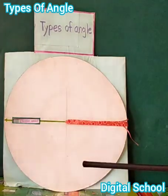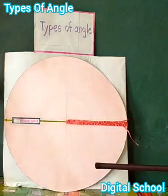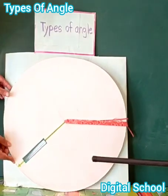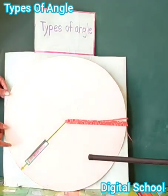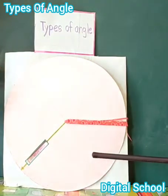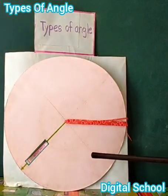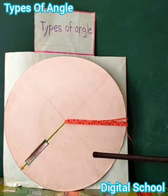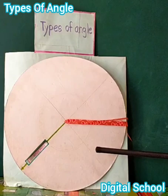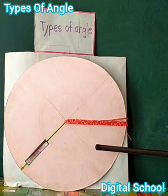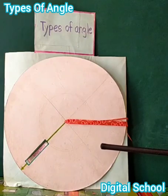Assalamu alaikum, I am Asuna. Today we will learn about types of angle. Dear friends, look at the board. This is a reflex angle. The definition of reflex angle: an angle that measures more than 180 degrees but less than 360 degrees is called a reflex angle. In the figure, ABC is called a reflex angle. Thank you.